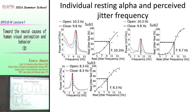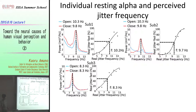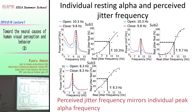This was not only the case for this subject. For other subjects, we also found a very nice match between passive jitter frequency and intrinsic alpha frequency measured during the resting state. This suggests that passive jitter frequency seems to mirror individual peak alpha frequency. In other words, with this illusion, you are watching your own alpha oscillation.